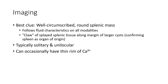In imaging, the best clue is a well-circumscribed round splenic mass with characteristic features on all modalities. A cleft of splenic tissue along the margin of the large axis confirms the spleen as the organ of origin. Typically solitary, and uniquely can occasionally have a rim of calcification.